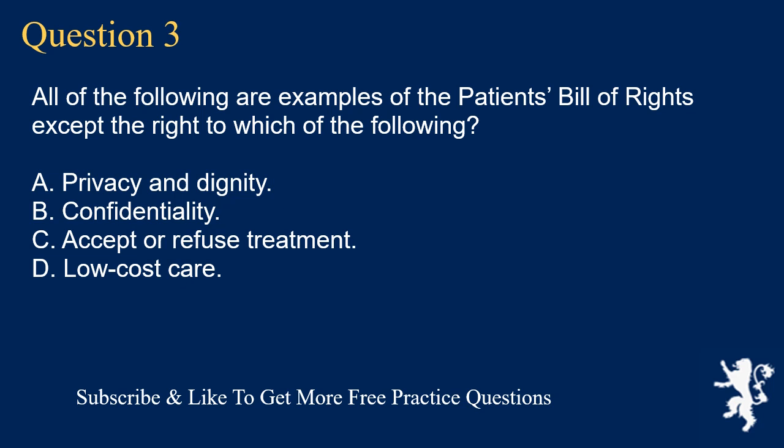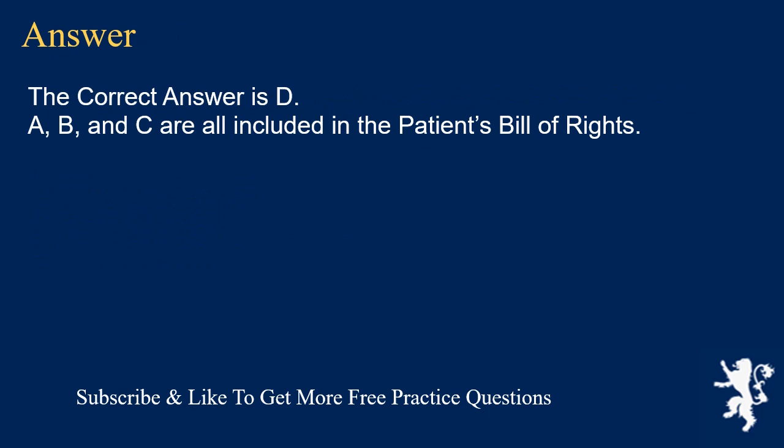Question 3. All of the following are examples of the patient's bill of rights except the right to which of the following? A. Privacy and dignity. B. Confidentiality. C. Accept or refuse treatment. D. Low-cost care. The correct answer is D. A, B, and C are all included in the patient's bill of rights.